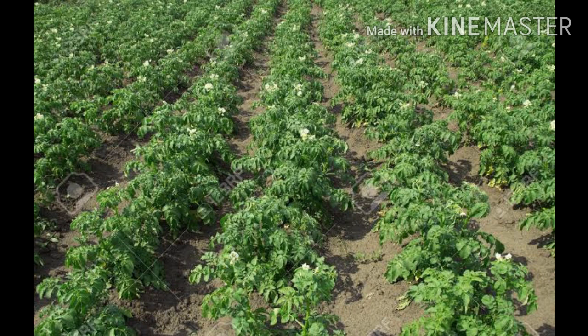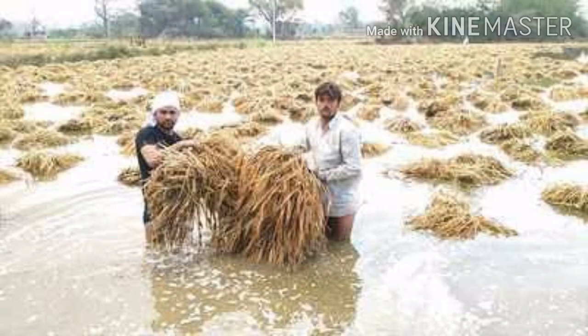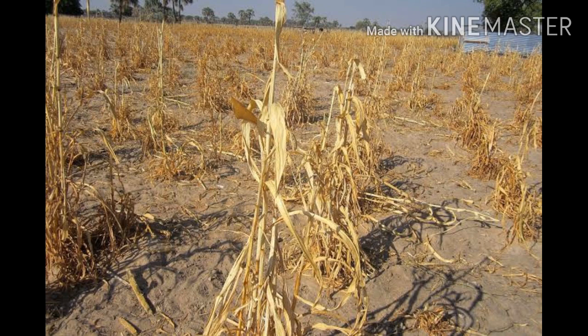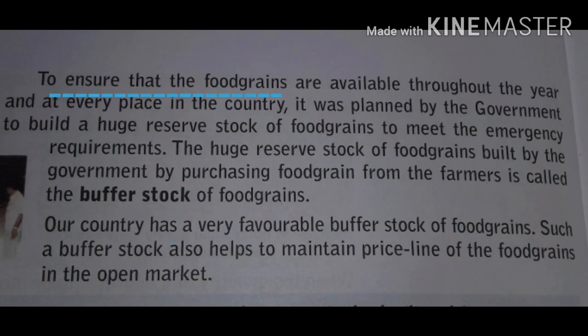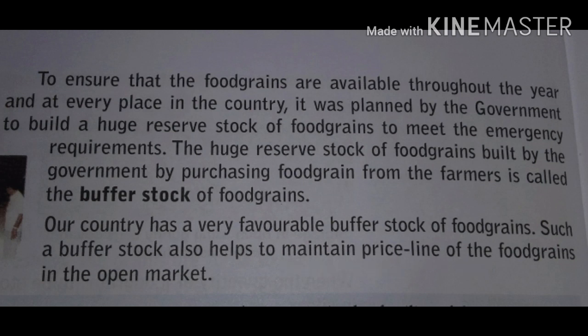Our last topic is buffer stock. Crops are seasonal — sometimes we get a very good yield with good rainfall, but sometimes floods or droughts destroy the crop and we don't get sufficient grains. To ensure food grains are available throughout the year across the country, the government builds up a reserve stock called buffer stock. This also helps keep food grain prices from rising too high.